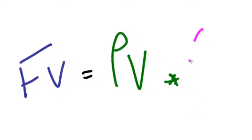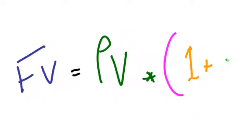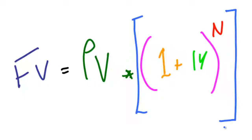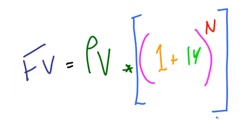The future value is equal to the present value multiplied by one plus the interest rate raised to the power of the number of periods. We'll see this on an Excel spreadsheet in a couple of minutes.